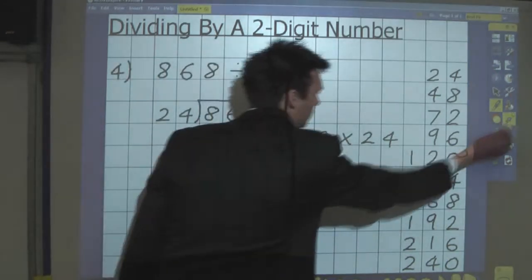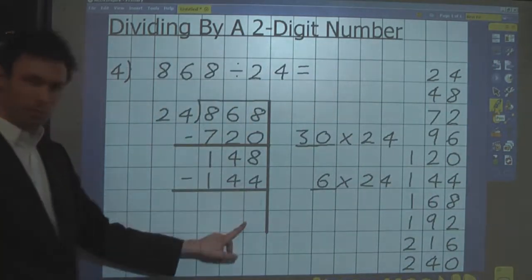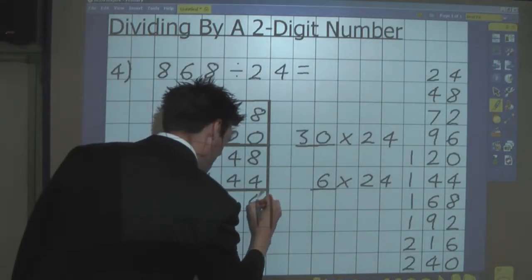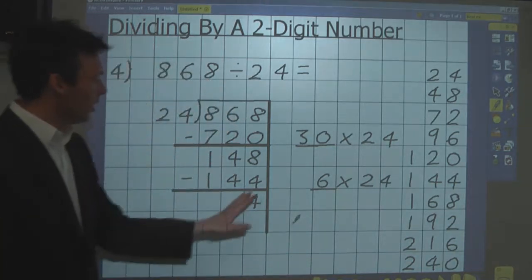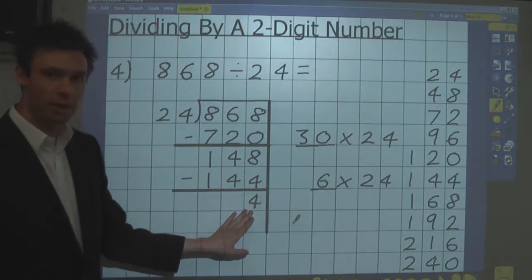Leaving me with 4. I cannot take any more lots of 24 away from 4, so that's my remainder.